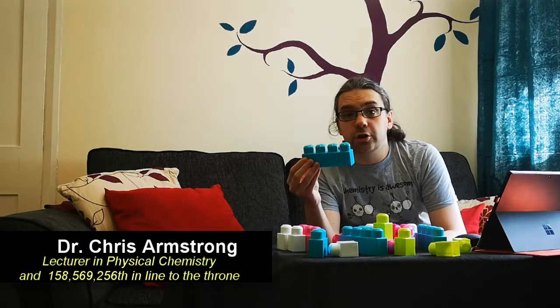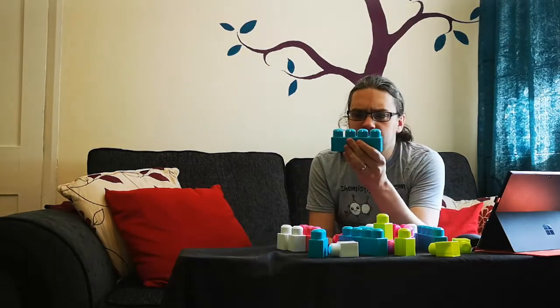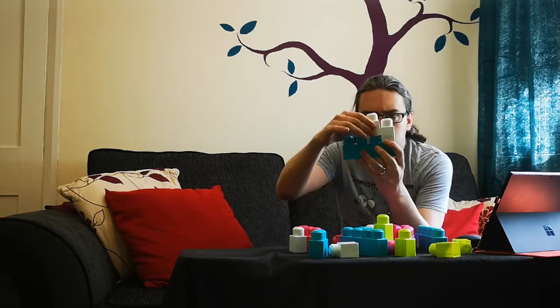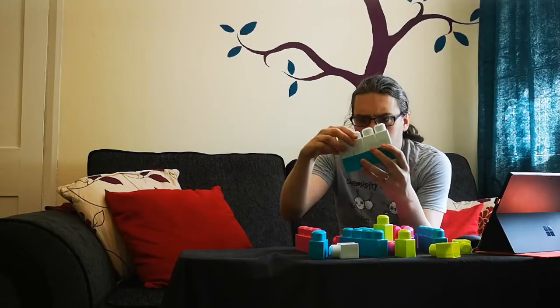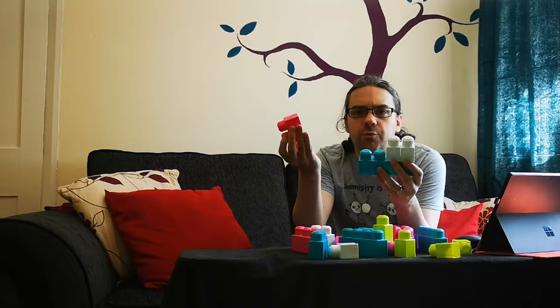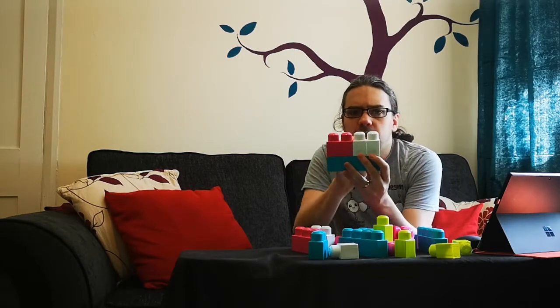Here we have a toddler's building block and as you can see it has four studs on it, which means we could take these single studs and add one, two, three, or four on top. Or if we use one of these two bricks we have two left over.